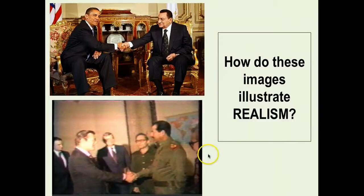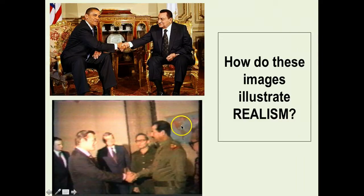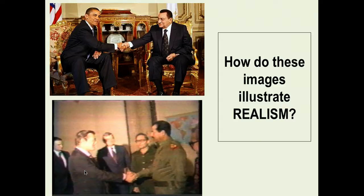Barack Obama shaking hands with Hosni Mubarak is a clear example of how the concept of realism or real politik plays out in US foreign policy. Now take a look at this next image — do you recognize who this is? That is former Iraqi president, or dictator, Saddam Hussein.